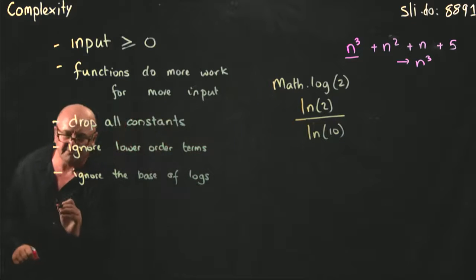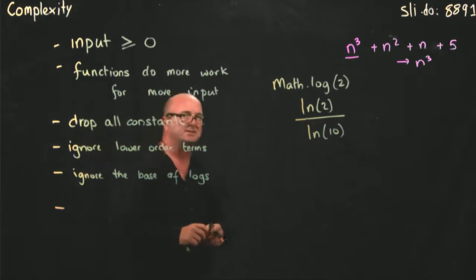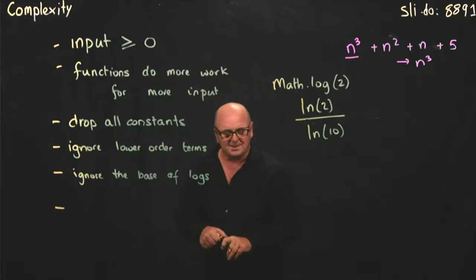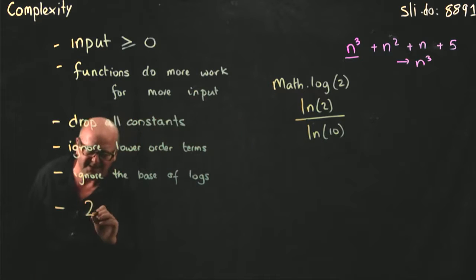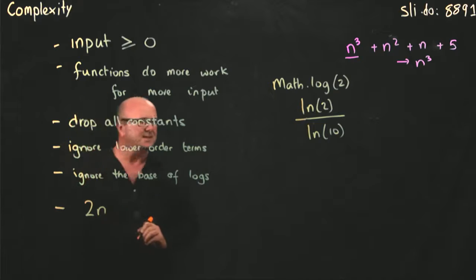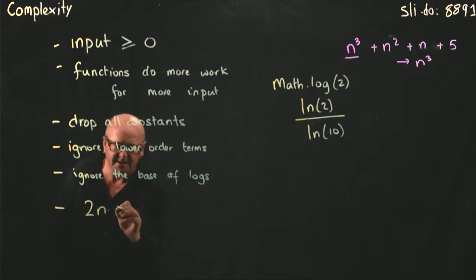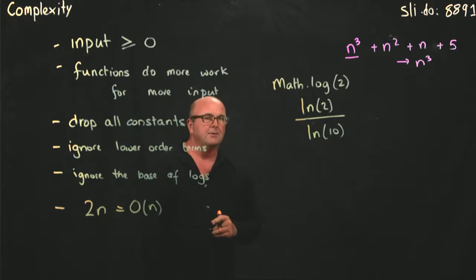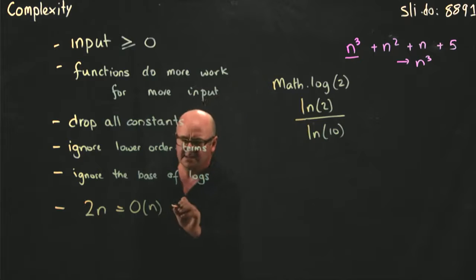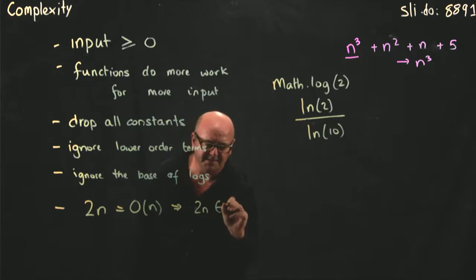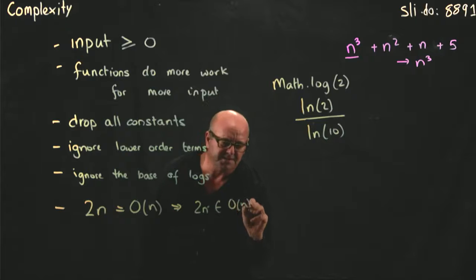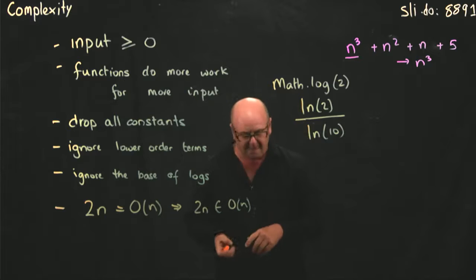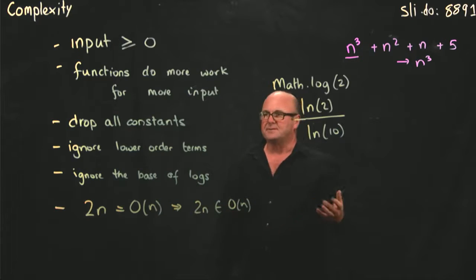The last point is that we're going to use the equal sign in a way that drives mathematicians wild, which is a bonus. If we say, for example, 2n equals big O of n, what we actually mean is that 2n is a member of the set of functions that work as big O of n. We use equals to mean is a member of the set of.